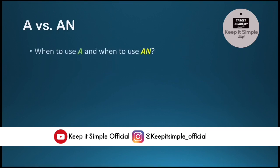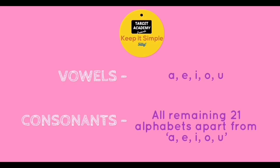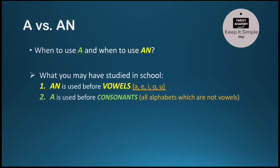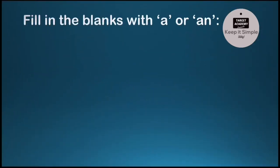Now, within indefinite articles, there are two: A and AN. So when do you use A and when do you use AN? Most of us were taught in school that AN is used before vowels — A, E, I, O, U — and A is used before consonants. There are 26 alphabets; these 5 are vowels and the remaining 21 are consonants. Based on this school knowledge, try solving the next 10 questions before we reveal the correct answers.